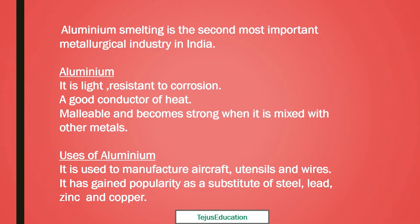Now, let's learn the properties of aluminium. Aluminium is light and resistant to corrosion. It is a good conductor of heat — we have learned this in the LXD chapter of Physics, CBSE Class 10. One more property is that it is malleable; it can be turned into sheets and becomes strong when mixed with other metals. It also has a ductile nature, meaning it can be stretched into the form of wire.